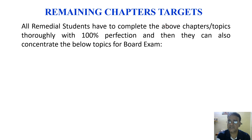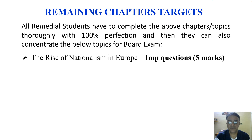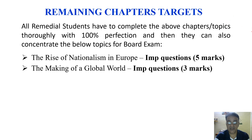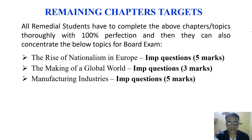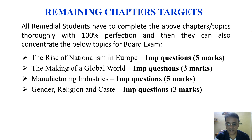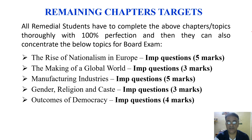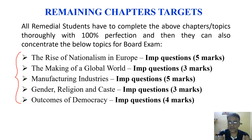100% perfection means completing NCERT book exercise questions, all questions in my minimum level study material, plus practice questions and CBSE previous 10 years questions. Students can also concentrate on the following topics for a good exam score: Rise of Nationalism in Europe — important questions covering five marks; Making of a Global World — three marks; Manufacturing Industries, Gender Religion and Caste — three marks each, totalling around eight marks; and Outcomes of Democracy — four marks. All important questions for these chapters are given in my minimum level learning study material.